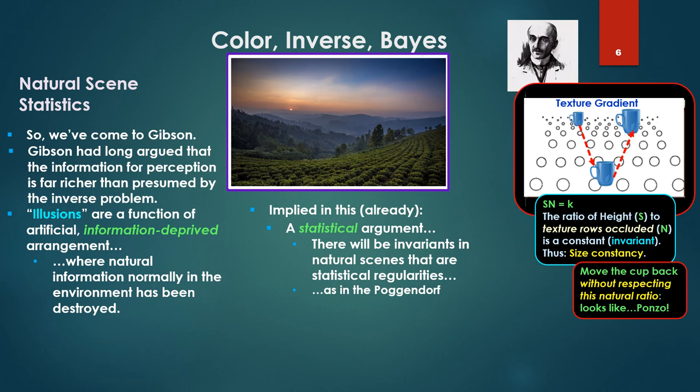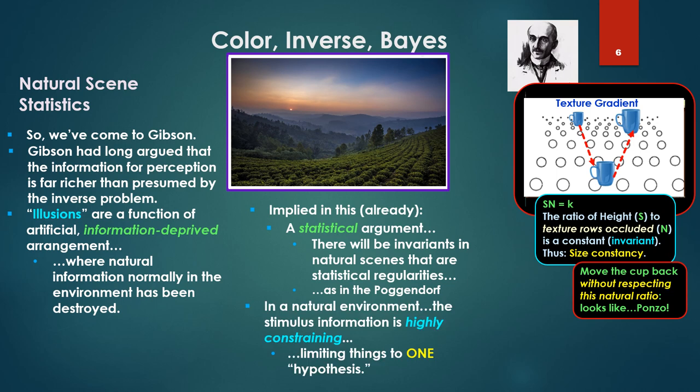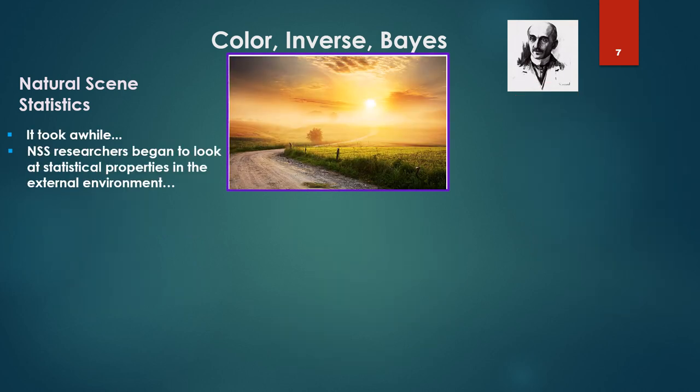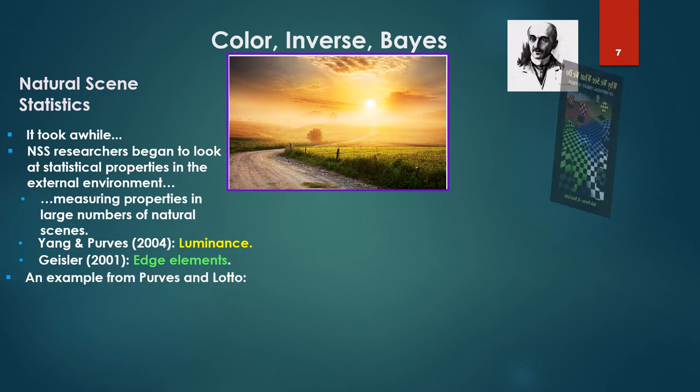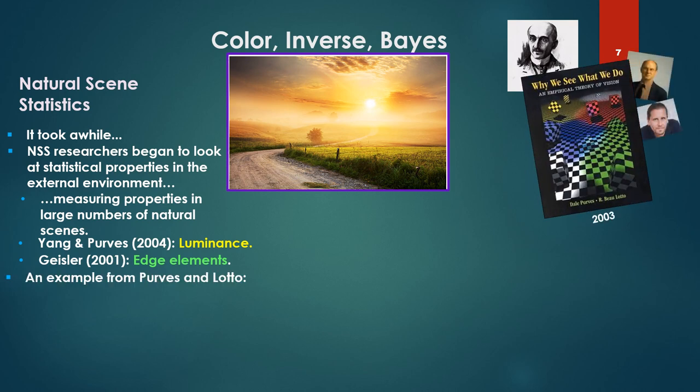In a natural environment, the stimulus information is highly constraining, limiting things to just one hypothesis. Now it took a while, but natural scene statistics came on the scene, and natural scene statistic researchers began to look at statistical properties in the external environment, measuring properties in large numbers of natural scenes. Yang and Purvis, for example, luminance. Geisler, edge elements.